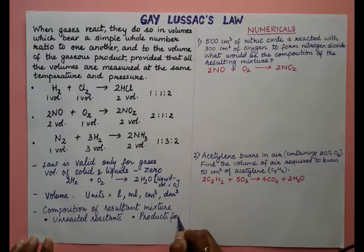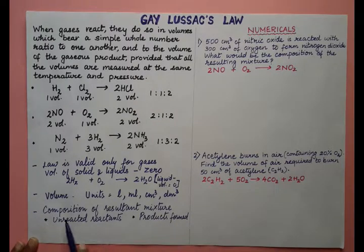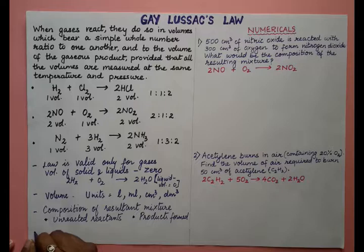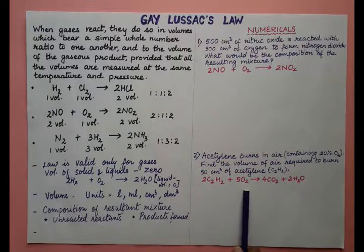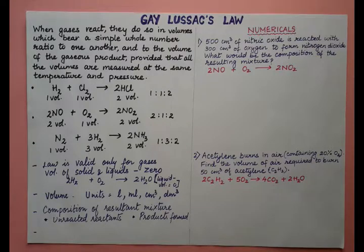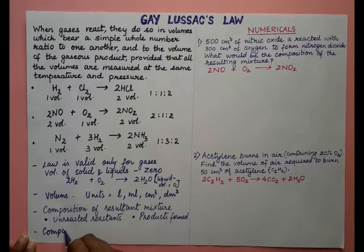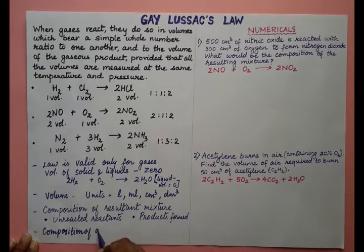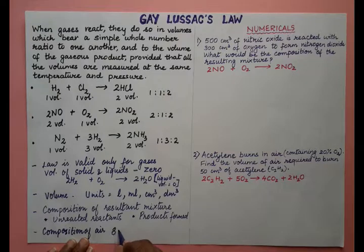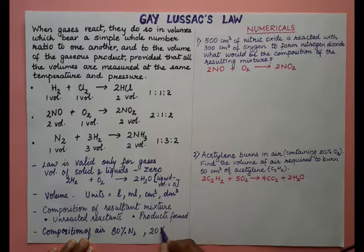These two things — unreacted reactant and products formed — must be calculated when asked for the composition of the resultant mixture at the end of the reaction. Another important point: any hydrocarbon when burned in the presence of oxygen will always produce carbon dioxide and water vapour as products. Also, for the composition of air, always take 80% nitrogen and 20% oxygen when solving numericals.